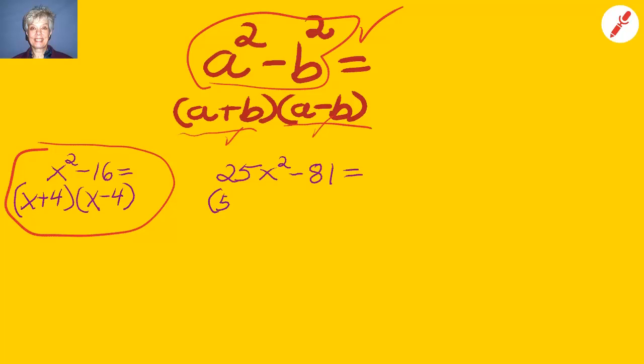Now, let's look at 25x squared minus 81. Both of these are perfect squares, and look what they factor into. 5x plus 9, 5x minus 9. 5x is the square root of 25x squared, and 9 is the square root of 81.